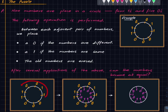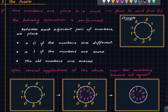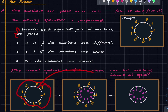So, for example, this was our starting configuration. We apply this operation: these two numbers are adjacent and different, so we place a 0 here between them. These two numbers are adjacent and the same, so we place a 1, and so on. These two are different, so we place a 0 and so on. Then the old numbers are erased — we erase all the orange numbers — and we get another configuration. So, starting with the configuration, this operation produces a new configuration.